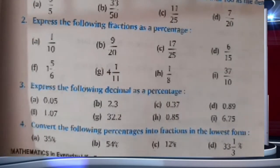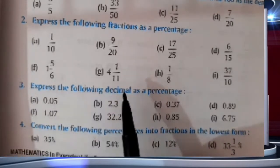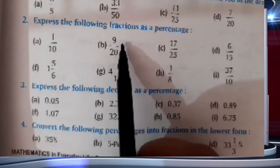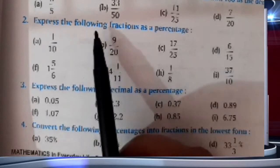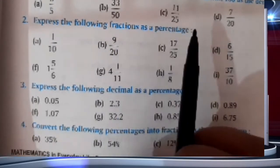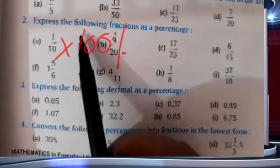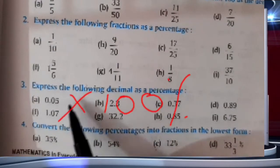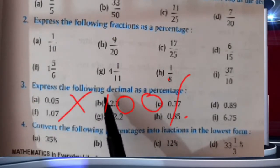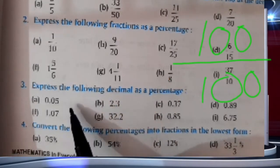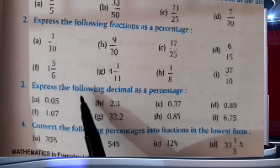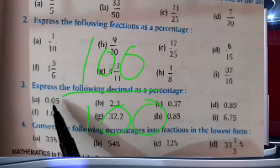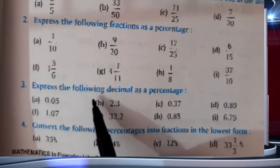Question number 3 is: express the following decimals as a percentage. This question is same as question number 2, where we expressed fractions as percentages by multiplying by 100%. The same way, in decimals also we will just multiply the decimal by 100%, because percent means upon 100. If you multiply and divide by the same number, it will not make any difference.